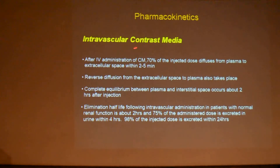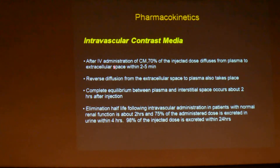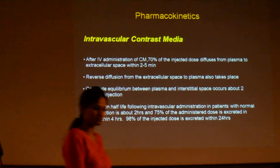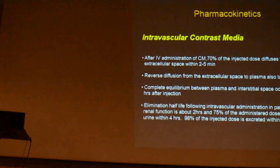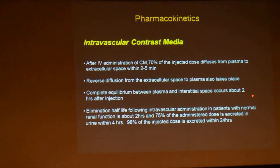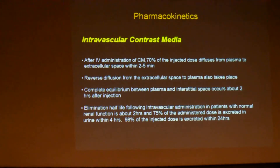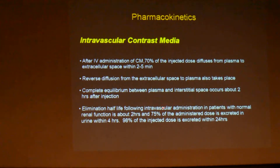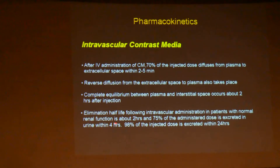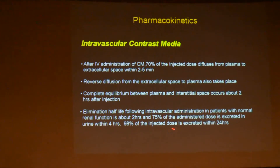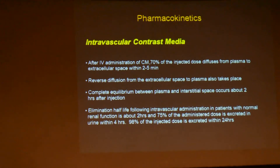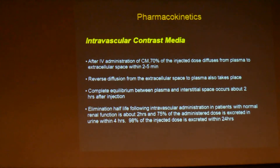Coming to the pharmacokinetics of the various intravascular contrast media: once it is injected intravenously, 70% of the contrast diffuses from the plasma to the extracellular space, and reverse diffusion also takes place. Equilibrium should be maintained about two hours after injection. The elimination half-life should be within two hours. About 75% of the contrast should be excreted through urine in four hours, and 98% should be excreted through urine by 24 hours. If the contrast media fulfills these criteria, it is a proper ideal contrast media.